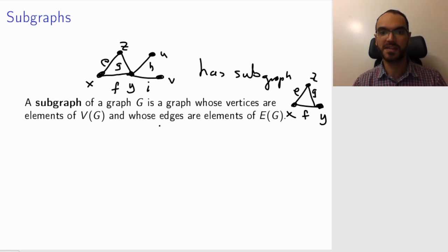So notice that a subgraph in particular has to be a graph. For example, I cannot take just the vertex X and the edge E. This is not a graph because an edge cannot just go into empty space, it has to end in a vertex. So if I want X and E to be in my subgraph, at the very least, I have to add the vertex Z. And so that is what it means to be a subgraph.